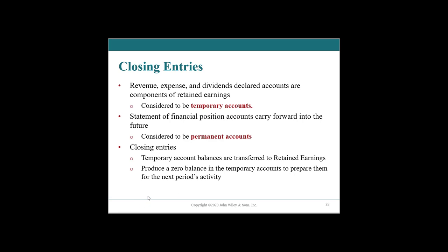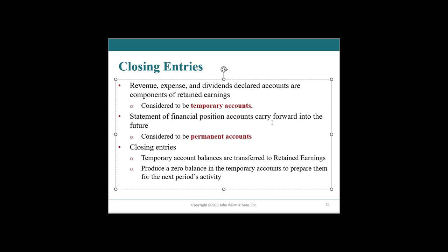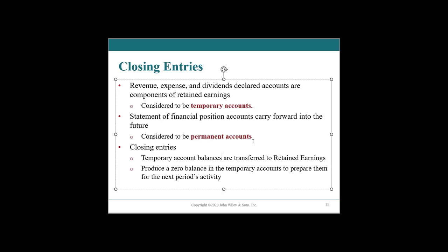The income statement is for the period — all of the revenues, expenses, and dividend accounts are considered temporary accounts. We reverse all of these revenues, expenses, and dividends so that they go into permanent accounts through our retained earnings. This is the manual articulation of taking our income statement, putting it through our statement of changes of equity, and capturing that in our balance sheet.